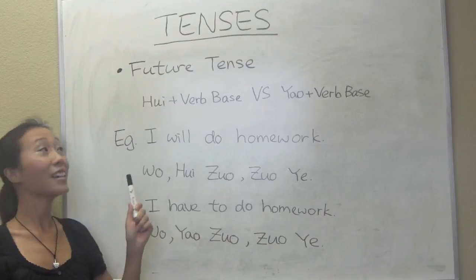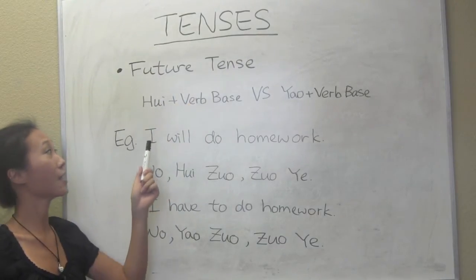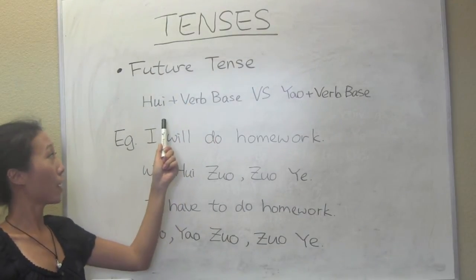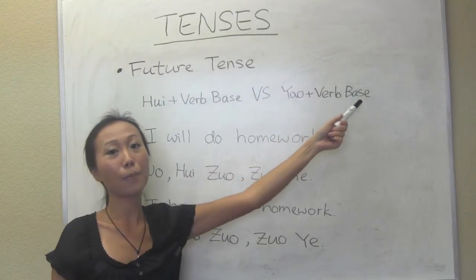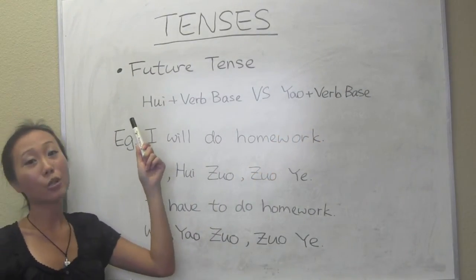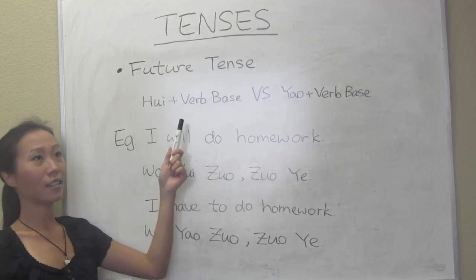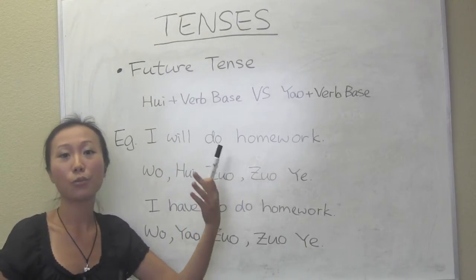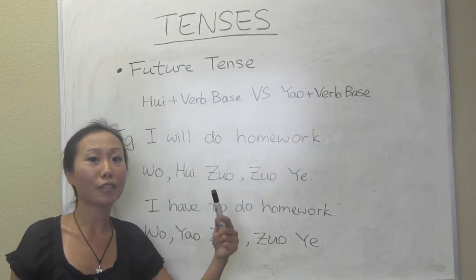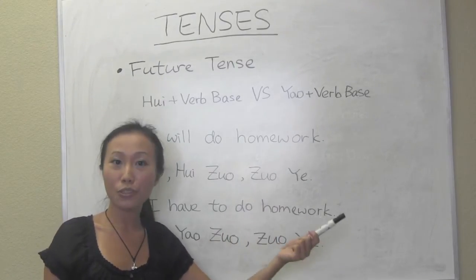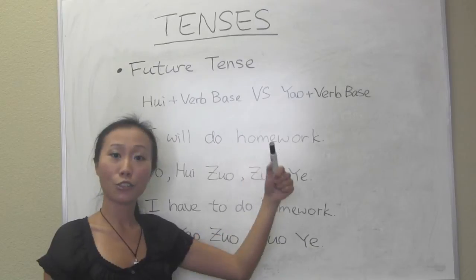Coming to the future tense, there are two different formats for expressing future tense in Chinese. The first is 会 plus the verb base, and the other is 要 plus the verb base. 会 is used for simple future tense when something is not certain — you just think you will do it. 要 is used when you have a need or obligation to do something — it's certain. So 会 is the uncertain format and 要 is the certain format.